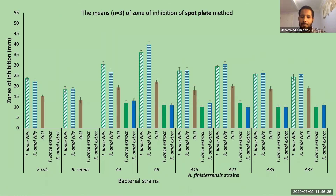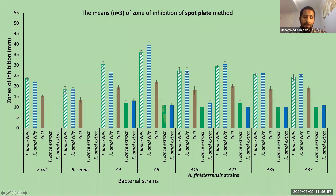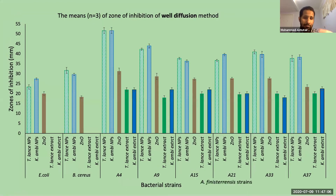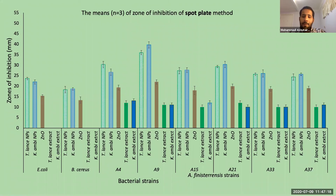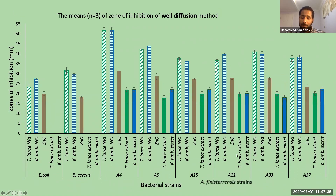The green synthesized zinc oxide nanoparticles in the spot plate method also showed a high mean zone of inhibition against Aliivibrio, but A9 specifically, and the lowest mean zone of inhibition was against Bacillus cereus. The plant extract showed a zone of inhibition against only Aliivibrio strains in both methods, whereas against E. coli and Bacillus cereus, there was no zone of inhibition from the plant extract in either method. There were also no significant differences between the antibacterial activities of Tasmannia lanceolata nanoparticles and Kunzea ambigua nanoparticles in both methods.